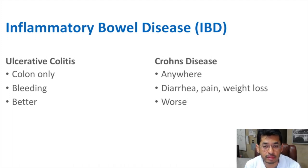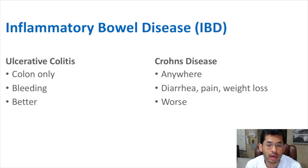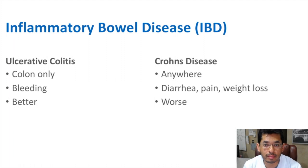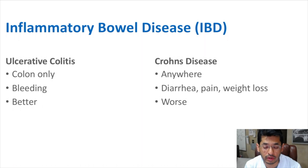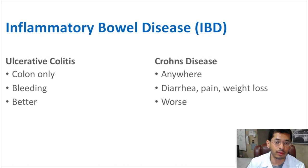Ulcerative colitis is limited to the colon, usually presents with bleeding, and out of the two, it tends to have an easier prognosis and is an easier disease to treat. Whereas Crohn's disease can present anywhere within the GI tract — the stomach, the small intestine, or the colon — and symptoms can manifest as pain, diarrhea, or weight loss. Out of the two, Crohn's is considered more difficult to treat than ulcerative colitis.